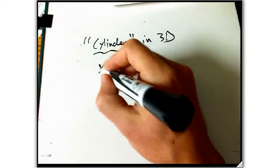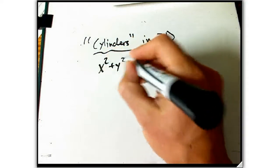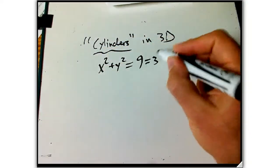A standard example of a cylinder would be, start with the equation x squared plus y squared equals nine. That's equals to three squared.